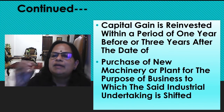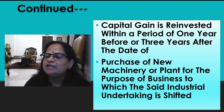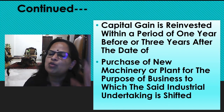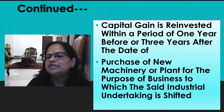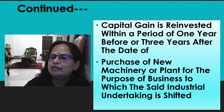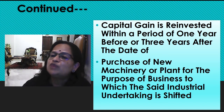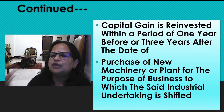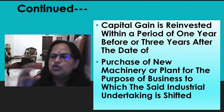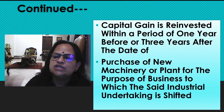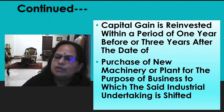Capital gain is reinvested within a period of one year before or three years after the date of transfer. Here you have to remember one year before — we can make an early decision before selling the existing unit. When they want to pre-establish to a semi-urban area they can start looking for that, do advance payments. That is how they will make investments one year before the sale of the existing property or three years after the date of transfer. He has to purchase new machinery or plant for the purpose of business to which the said industrial undertaking is shifted.